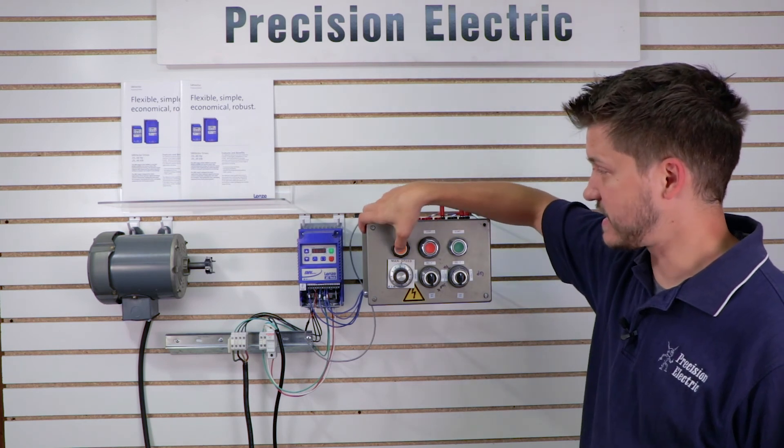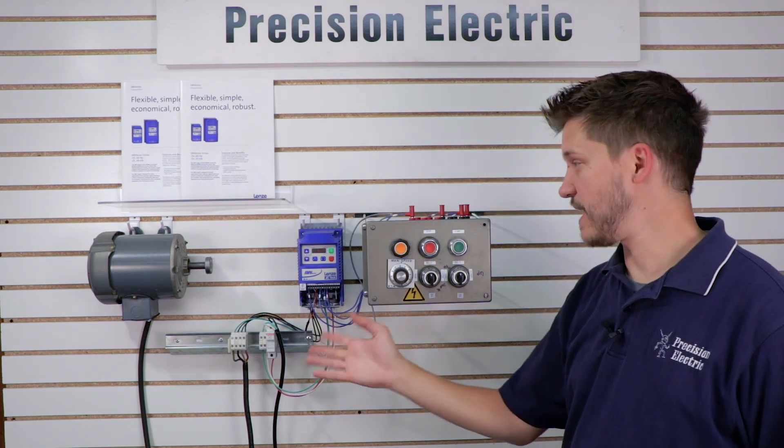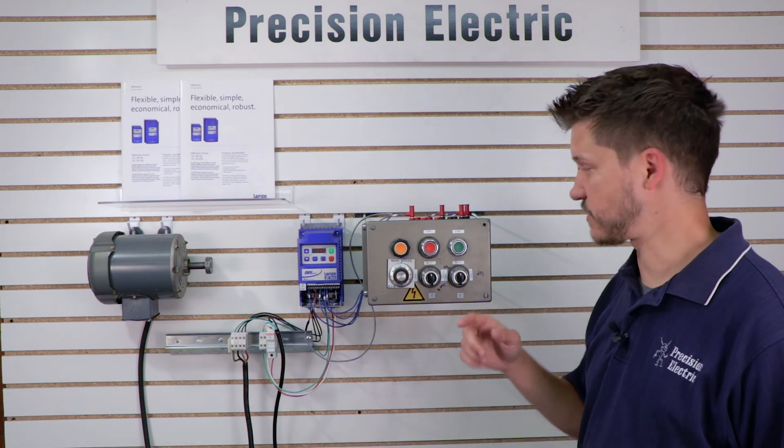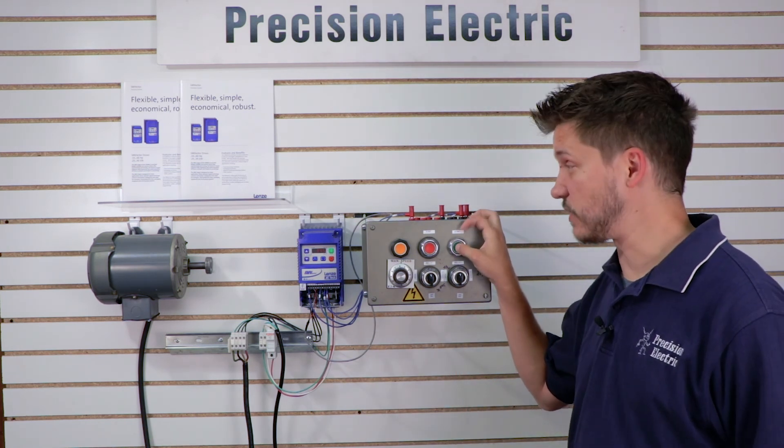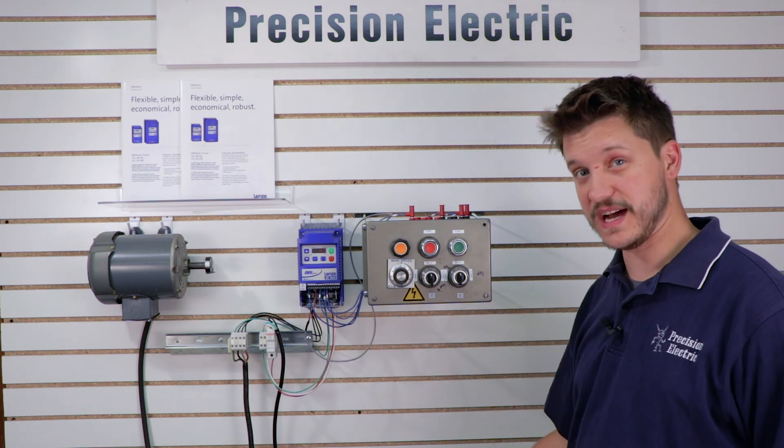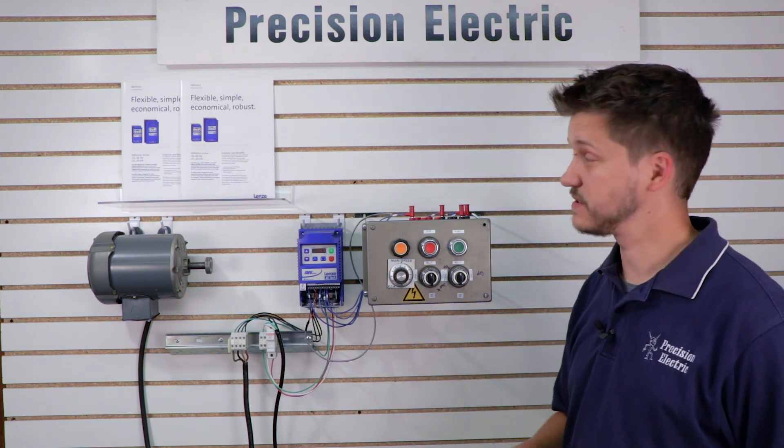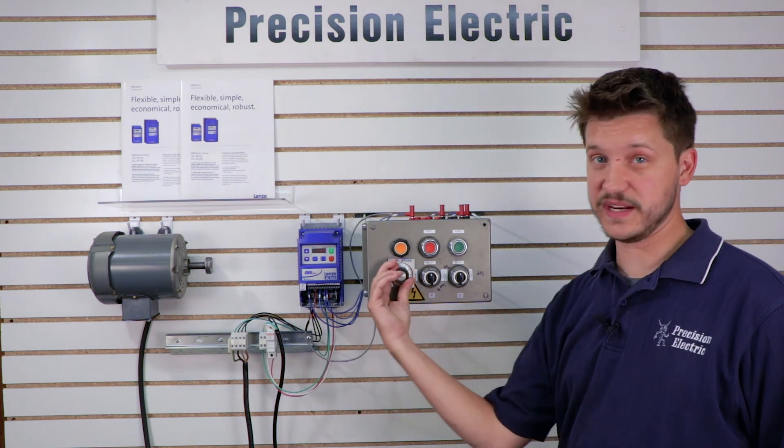And the third one I wired is the reverse, and you may or may not have seen that, but it did go in the opposite direction. In fact, while it's running in reverse, I can press forward, and it'll actually slow down. Go to a stop, and then go back into reverse. And again, you can change the speed at any time.